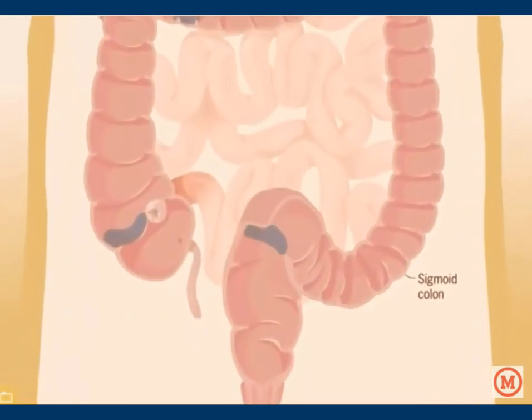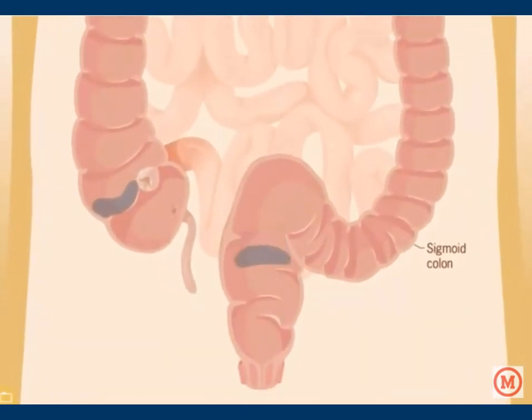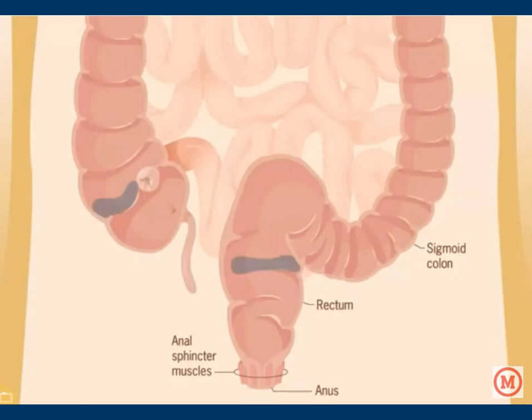The formed stool enters and is stored in the upper portion of the rectum. The anus contains anal sphincter muscles that remain tightly closed until neural input causes the rectum to widen. Then the stool descends, the anal sphincter relaxes, and defecation occurs.